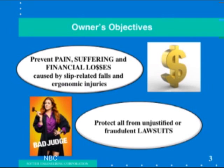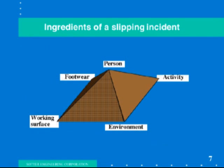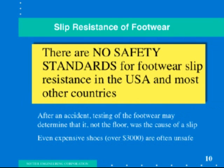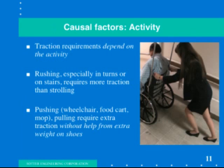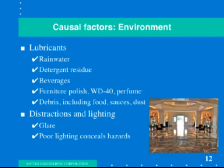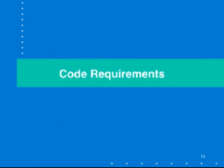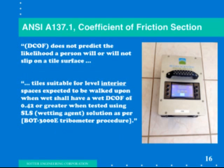The objective of testing for building owners and specifiers is to prevent accidents and financial losses on their property due to slips and falls. There are five ingredients that can lead to a slip injury. There are many areas that require wet slip resistance such as bathroom floors, pool decks, kitchens, showers, bathtubs, and outdoor walkways. The present International Building Code requires that level indoor floors meet a DCOF of 0.42 or greater.